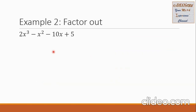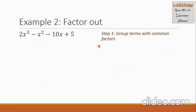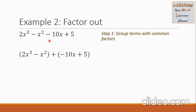Let us have example 2: 2x cubed minus x squared minus 10x plus 5. Step 1: group terms with common factors. I'm going to group the first two terms and the last two terms. Since our third term is negative, while putting the grouping symbol I write plus and then put the last two terms in the grouping symbol.